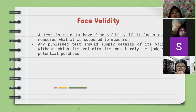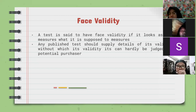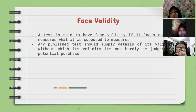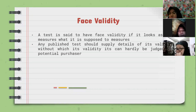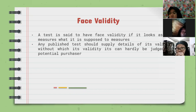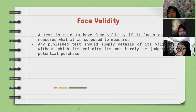And the last one is face validity. Face validity is how the test looks to other testers, teachers, moderators, and students — as if it measures what it is supposed to measure. A test is said to have face validity if it looks as if it measures what it is supposed to measure. Any published test should supply details of its validation, without which its validity can hardly be judged by the potential purchaser. For example, in a speaking test, face validity can be shown by having speaking activities as the main activities in the test, focused on student activity in speaking and nothing else.